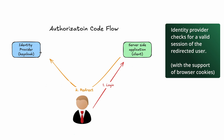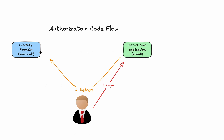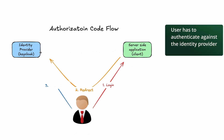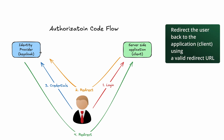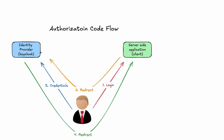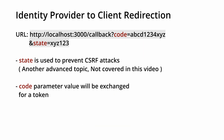Once the user is redirected to the identity provider, it will check whether there is a valid session for that user. If no valid session exists, Keycloak will prompt a login form where the user has to provide their username and password. Once authentication is successful, Keycloak will redirect the user back to the server-side application using the redirect URI. This redirection contains an important request parameter called 'code'.